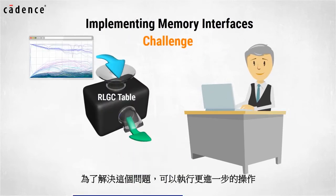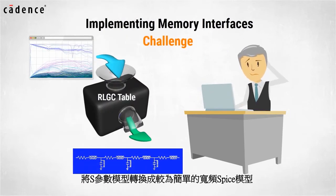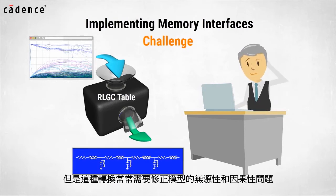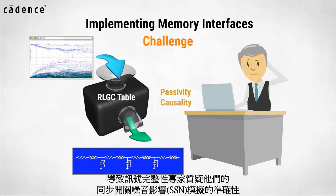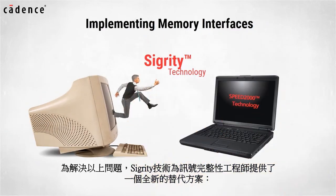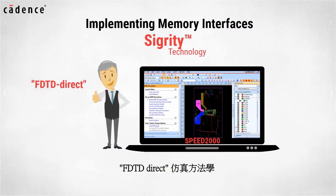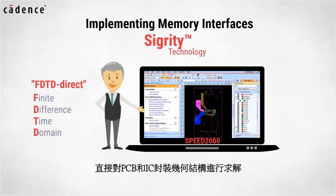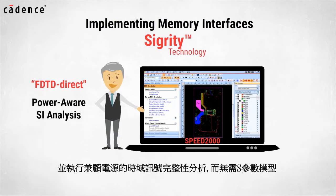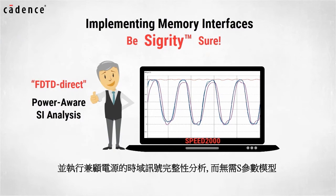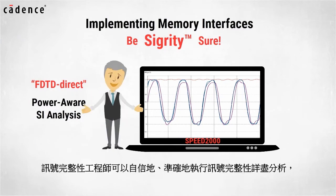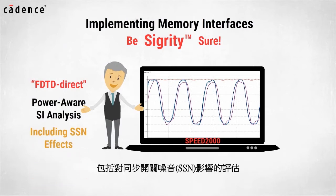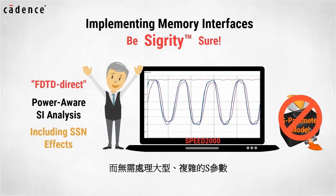To help address this, a conversion process to a simpler broadband SPICE model can be performed. But this conversion often requires modification to the model for passivity and causality, which can leave the SI engineer wondering about the accuracy of their SSN simulation. With Sigridi, SI engineers have an alternative method. Our FDTD direct simulation methodology calls our unique hybrid solver in combination with our finite difference time domain or FDTD engine, which solves PCB and package geometries directly and performs power aware SI analysis in the time domain without S parameters. Signal integrity engineers can confidently and accurately perform their detailed SI analysis including SSN effects without having to process large complex S parameters.